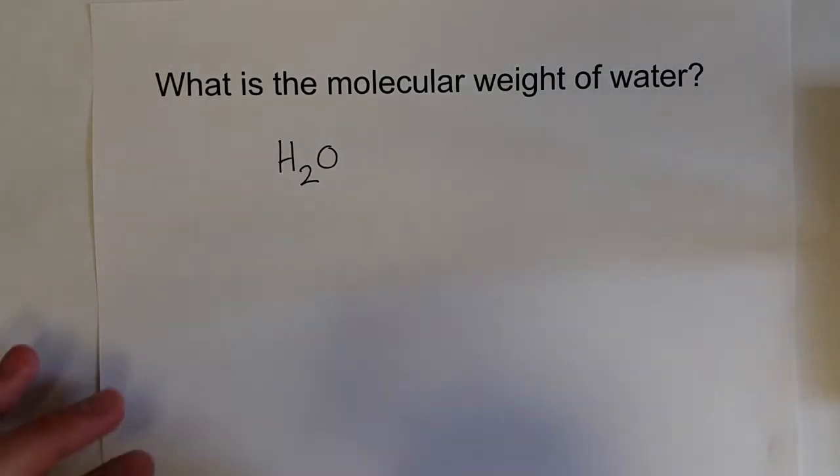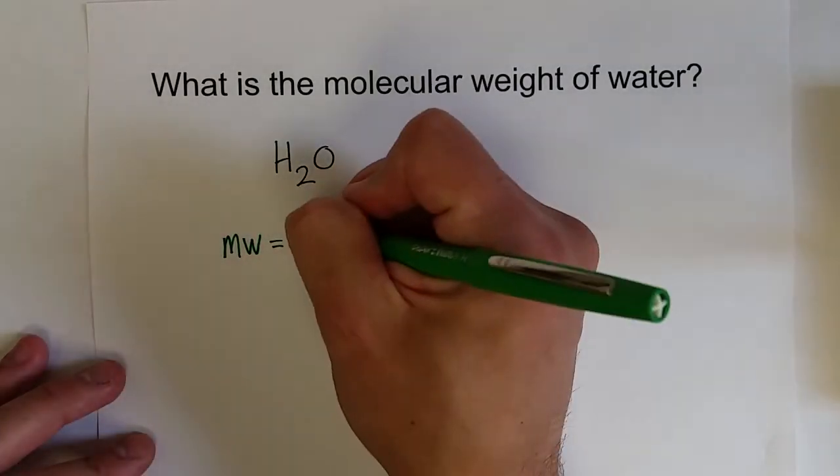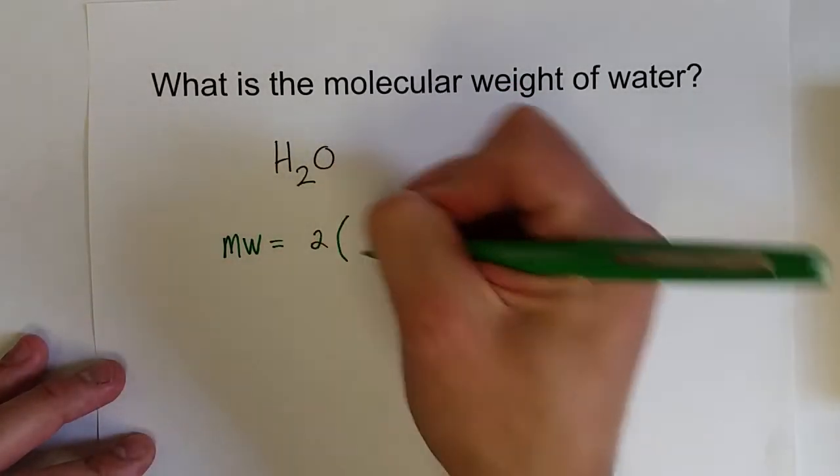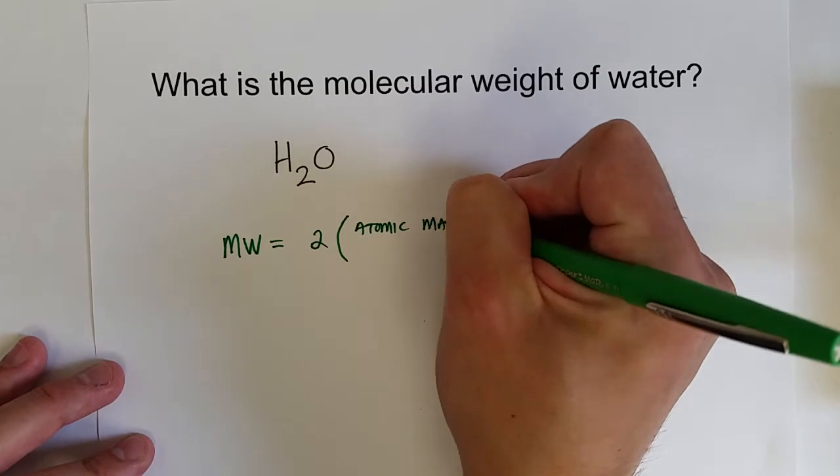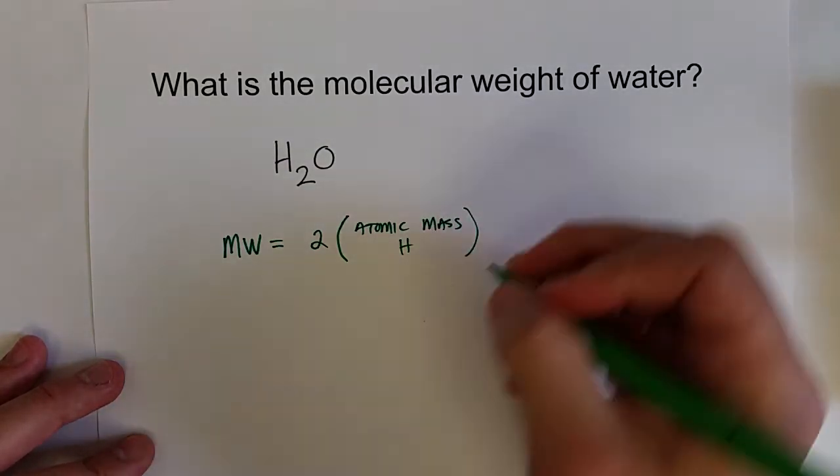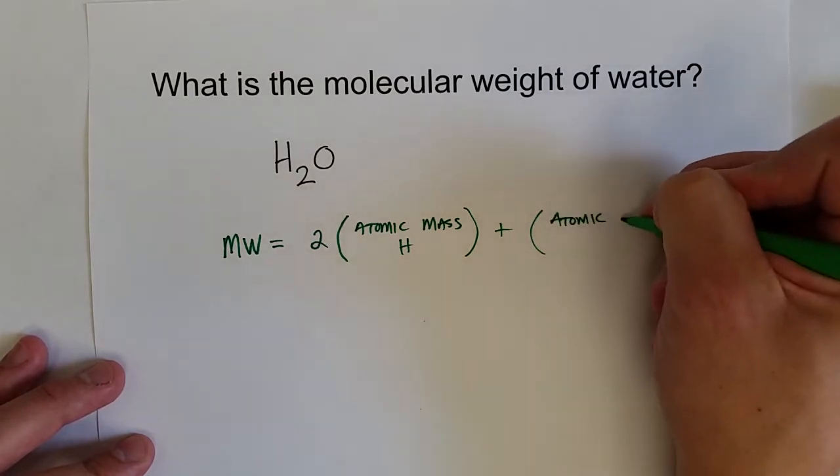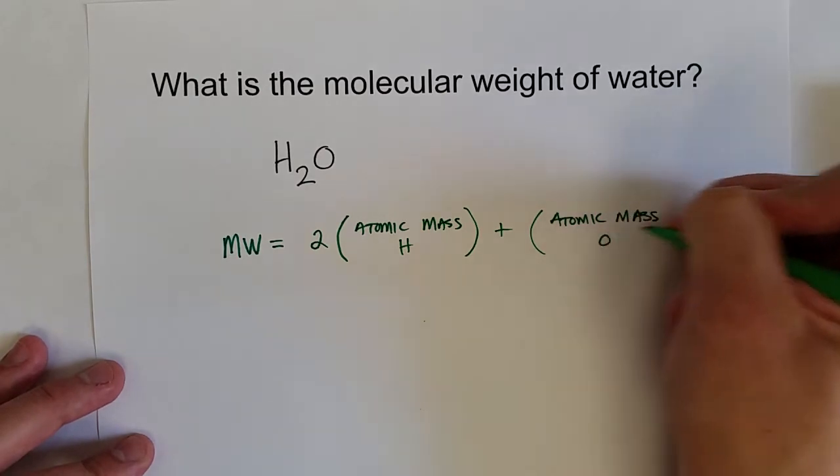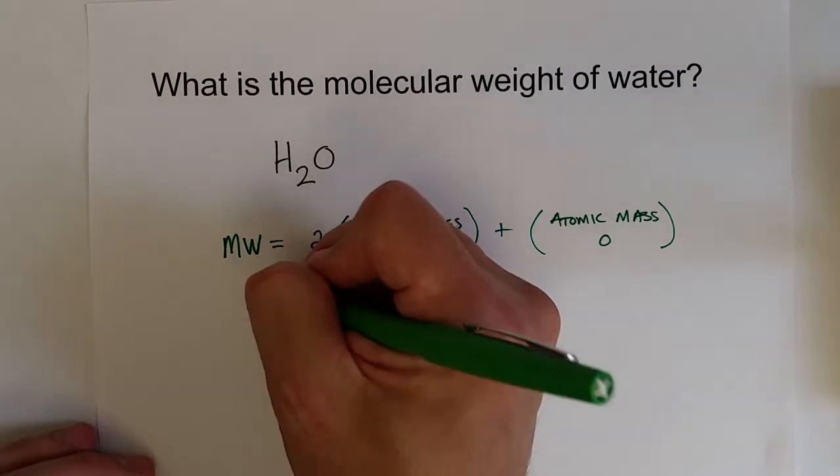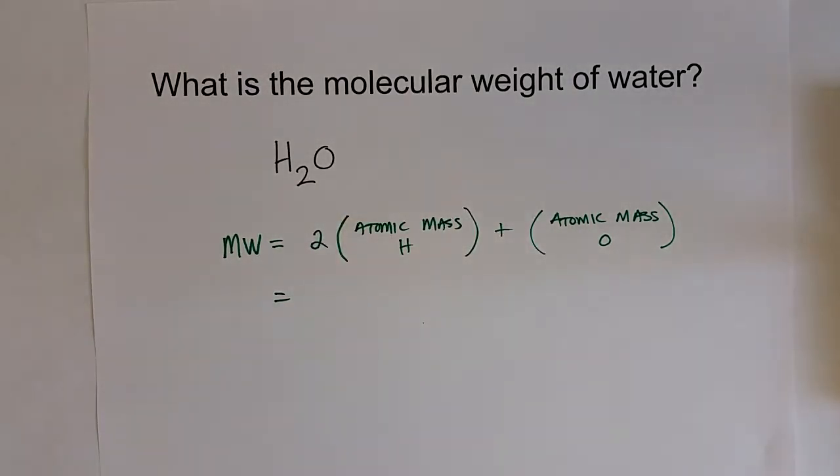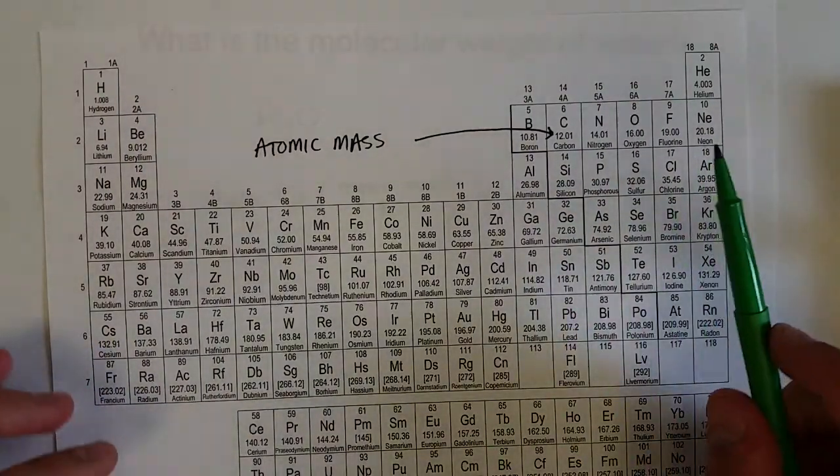When we calculate the molecular weight of water, we're going to multiply 2 times the atomic mass of hydrogen. And we're going to add that to the atomic mass for oxygen. Since there's only one oxygen atom, we're just going to add that.